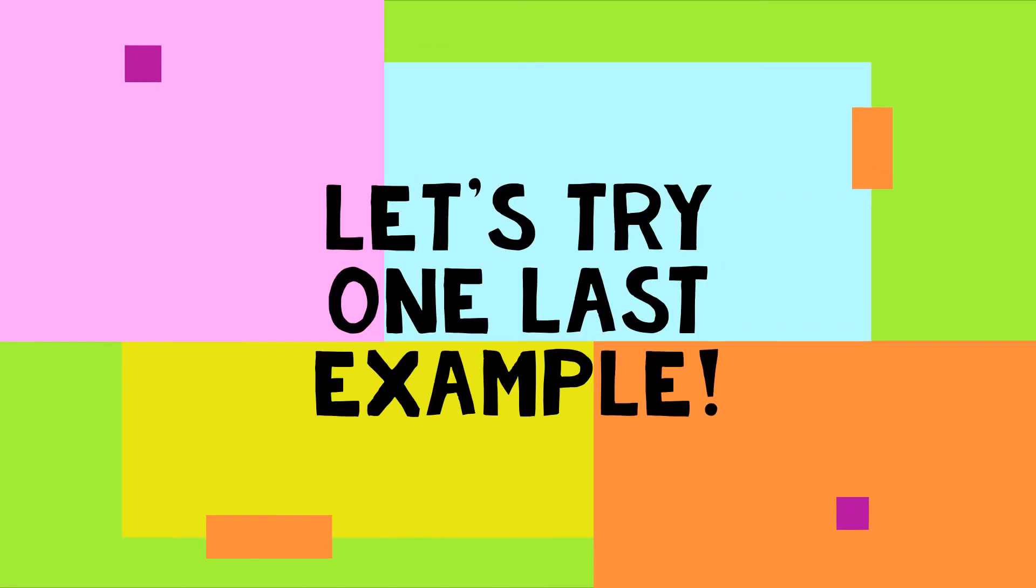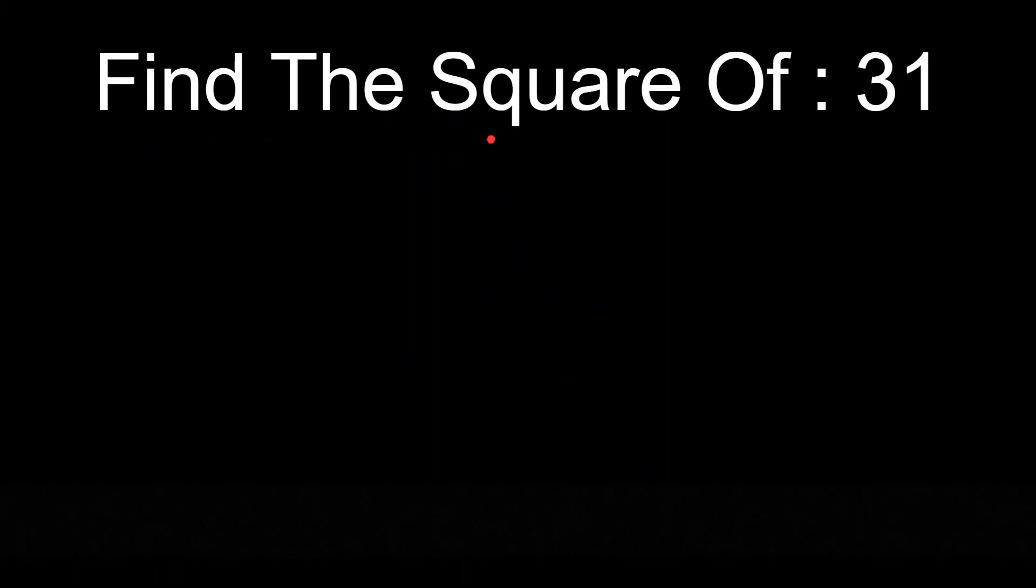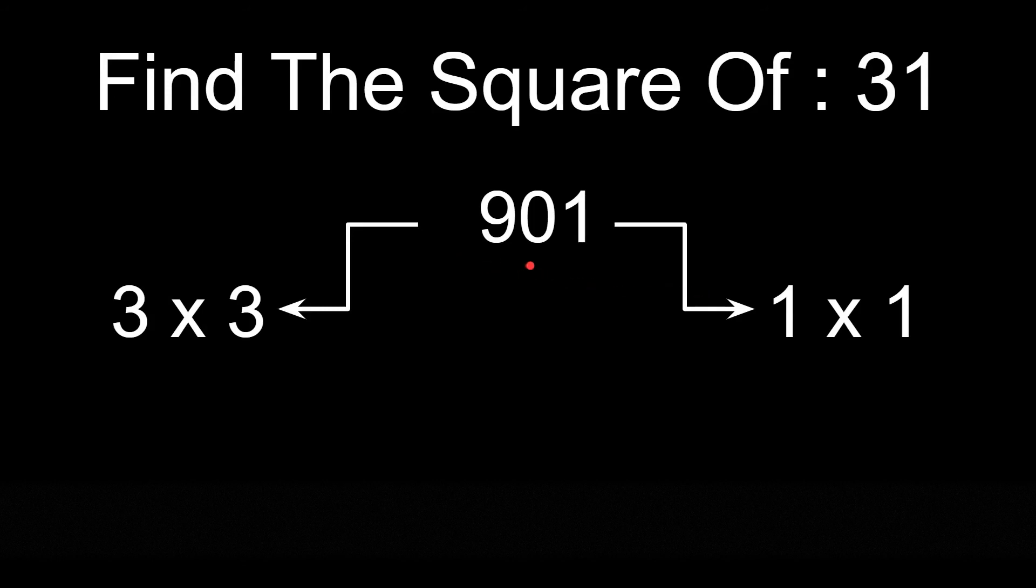Let's try one last example. Find the square of 31. So first we will write the square of 3, that is 9, and the square of 1, that is 1, but with a 0 because it should be in 2 digits.